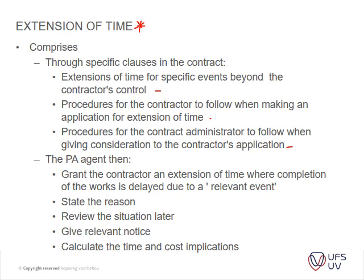I want you guys to please read through section 16.9 to get background so that you can extensively discuss the items listed there. Then we get to the principal agent — either he grants the contractor extension of time, and he should state the reason, then review the situation later, give a relevant notice, and calculate the time and cost implications. So that's more or less the procedures — a shortened version of that.